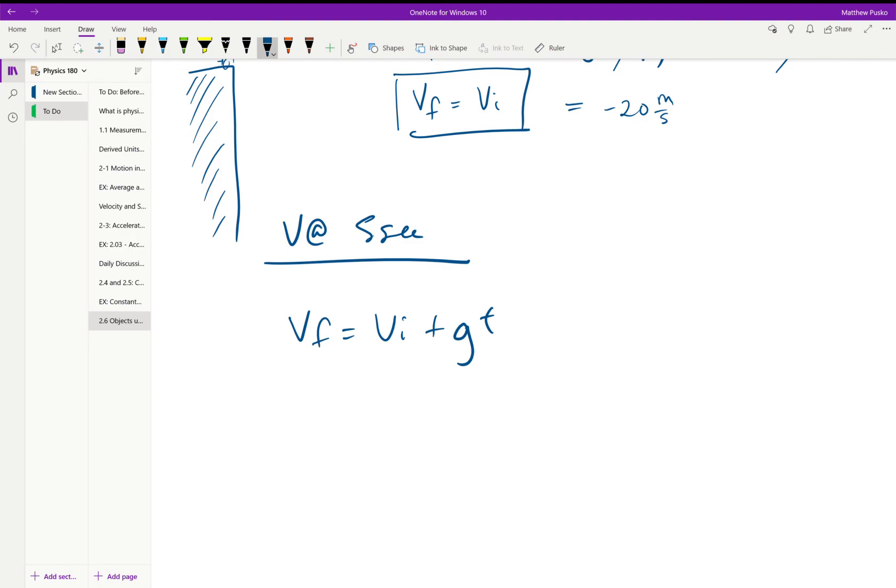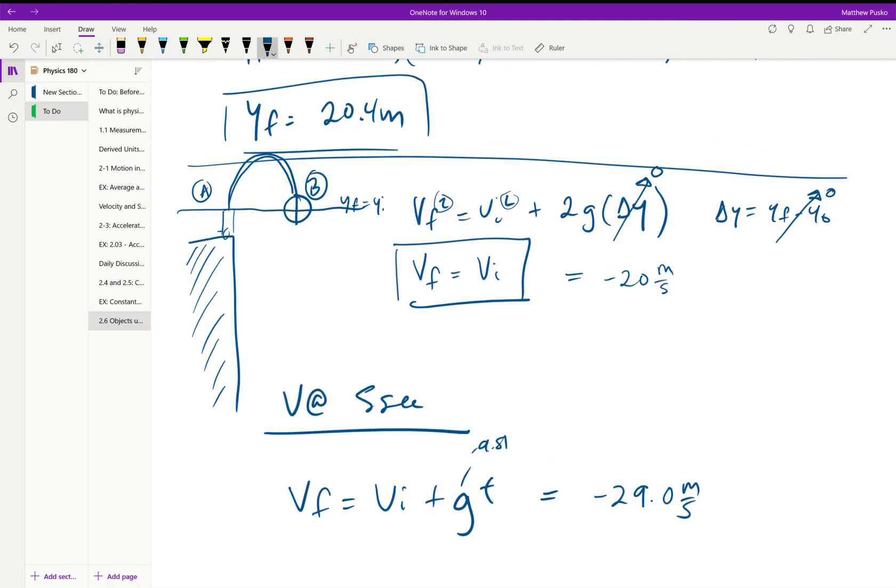And what we get, plugging, we have everything. We have our initial velocity and this says negative 9.81, we get simply a negative 29.0 meters per second. So at five seconds it's going faster now, so that's somewhere down here, five seconds, ta-da.